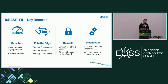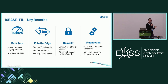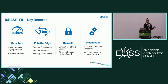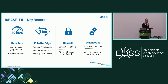The next benefit is IP to the edge. With TenBase T1L, the entire industrial network can converge on ethernet, which really simplifies data access throughout. Industrial networks are often fragmented with varying technologies requiring complex translation systems and gateways to convert between them, resulting in siloed data or data islands. By moving towards ethernet, the entire network converges on a single standard, eliminating those translation layers.